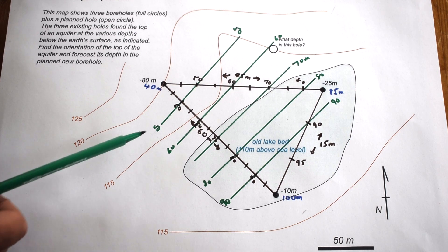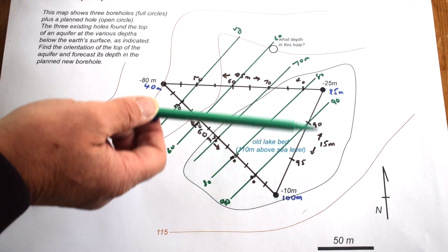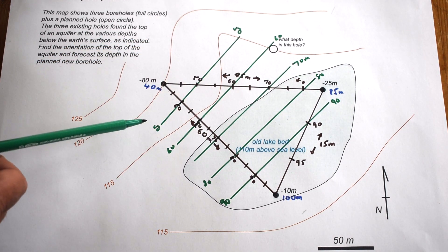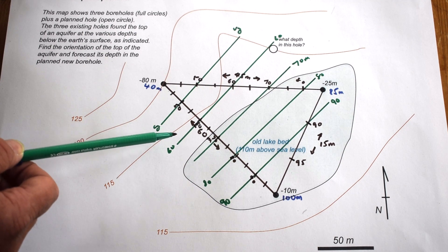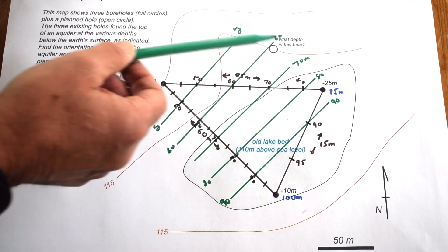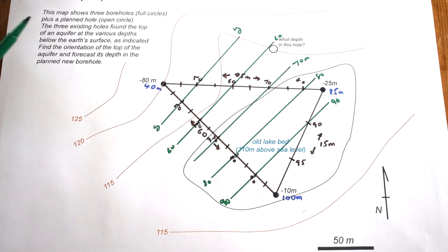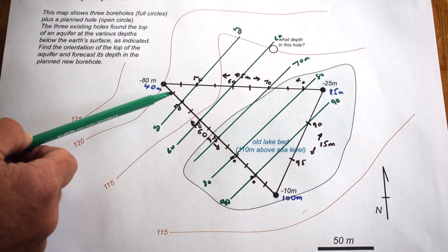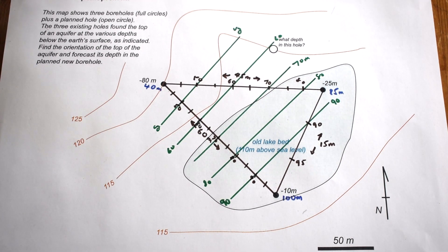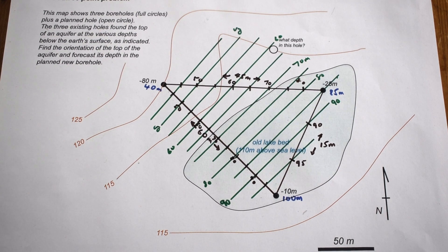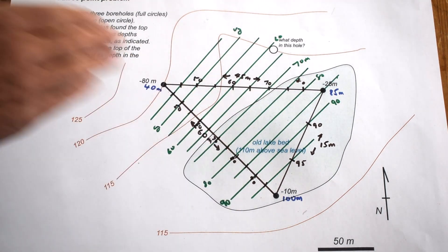For the aquifer to be a planar structure, which it has to be in order to solve the three-point problem like this, these contours should be equally spaced and parallel. There's a slight flare in these which represents a drafting error as I've constructed the contours, but it's pretty minor so we'll continue to work with it. Let me now interpolate in the five meter intervals between the set of contours we've drawn already.